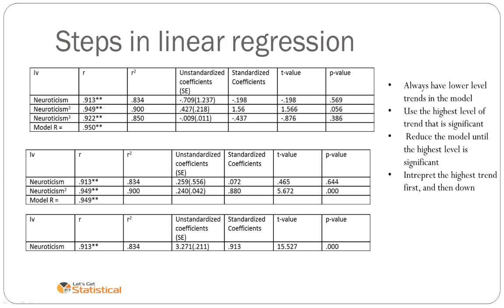We always have to test the lower level of trends in the model, i.e., we couldn't just put neuroticism cubed in a model. We need all of them. We use the highest level of trend that's significant, so if we work our way down the page looking at the p-values, we'd see that we'd probably end up with the neuroticism cubed model.